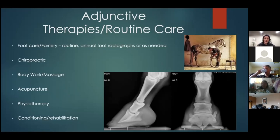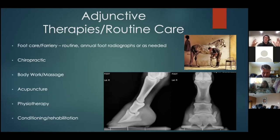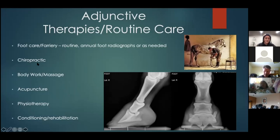The farrier, body worker, chiropractor, physiotherapist, and vet all play different roles — leaning on all of them for different aspects, seeing if we're observing the same things, can get the horse to a place of performance together. You don't need to go crazy with x-rays, but maybe one to two times a year take at least those two shots to confirm good angles and balance.